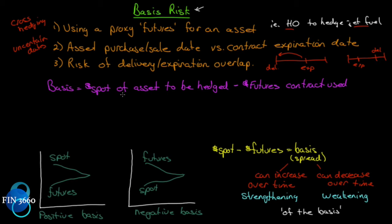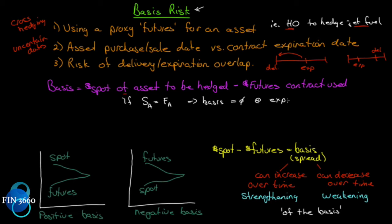Notice these can be different things. In the heating oil / jet fuel example, the spot price is jet fuel's spot price, while the futures price is heating oil's contract price. However, if the underlying spot asset is the same as the underlying futures asset, the basis will equal zero at expiration — that's a certainty. So the closer you close out your contract to expiration, the lower your basis risk; at expiration it should be zero.